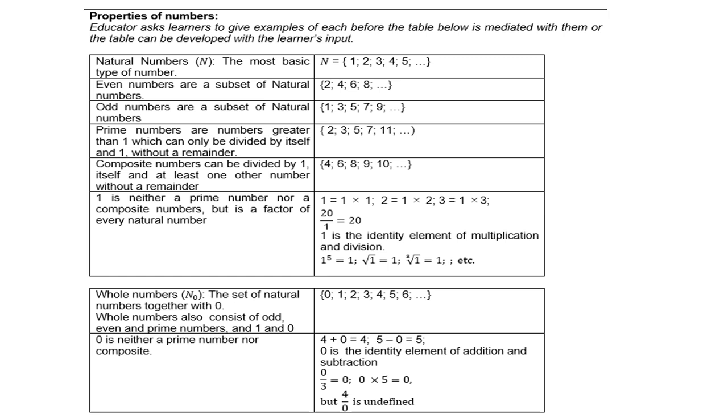Whole numbers—we show it as N with a zero subscript. The set of natural numbers together with zero. Whole numbers also consist of odd, even, and prime numbers. Take note: 0, 1, 2, 3, 4, 5, 6 to infinity. What is missing? Fractions are still missing, and negative numbers are still missing.